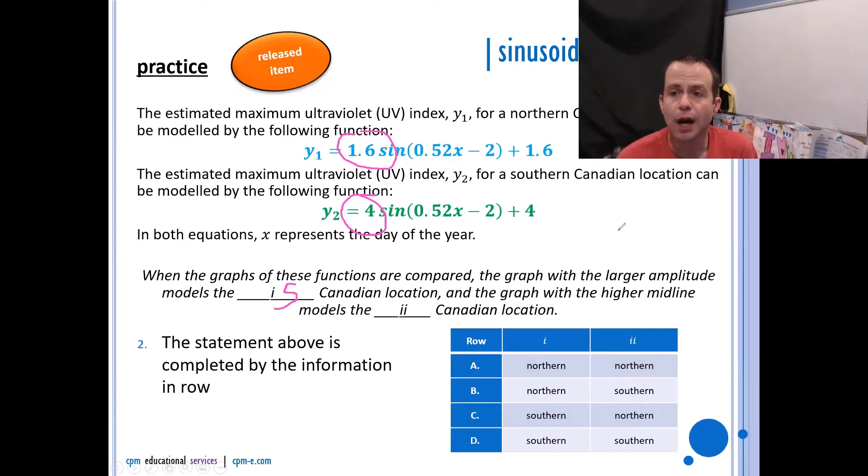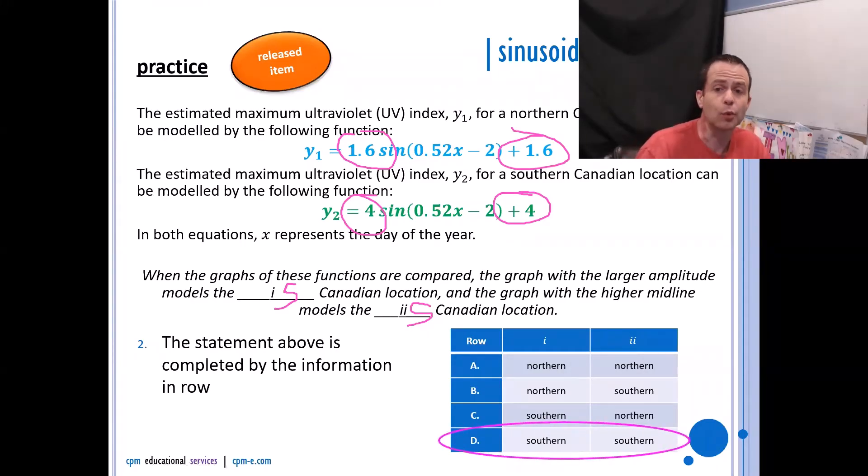Then the graph with the higher midline. Well, who's your midline? d is your midline. So I'm looking at 4 compared to 1.6. Well, that's the southern again. The southern has the higher midline. So it should be southern, southern, which means the answer is D. See, that really wasn't that bad a question once you got past the scariness of it being so many words.